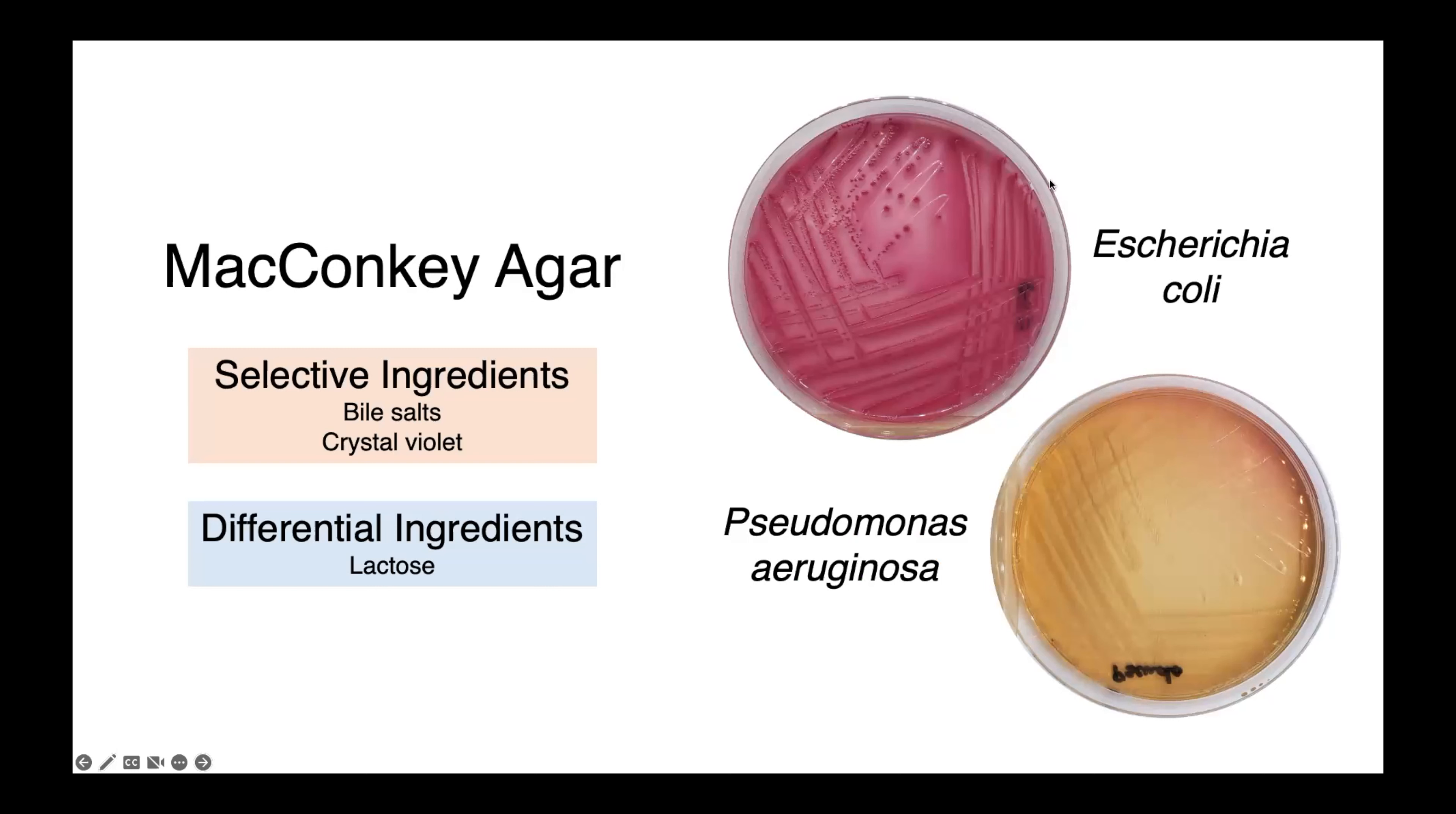On the right, you can see this MacConkey agar plate with a growth of E. coli, these nice bright pink lactose fermenting colonies. And then we have our lactose non-fermenter, Pseudomonas, with clear colonies.